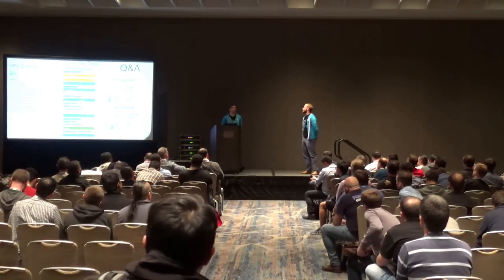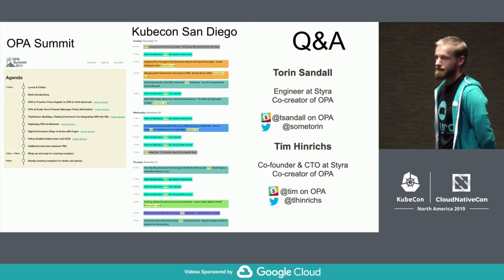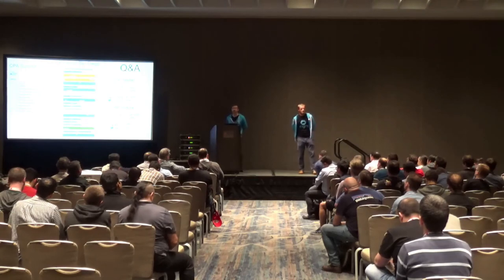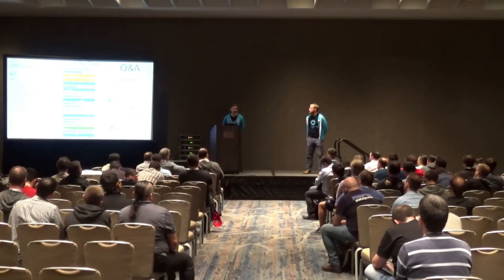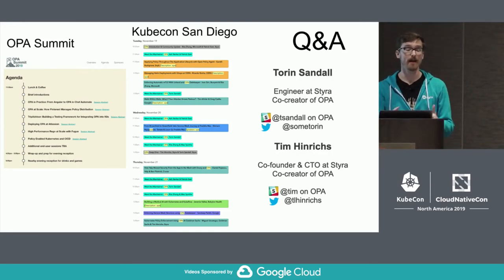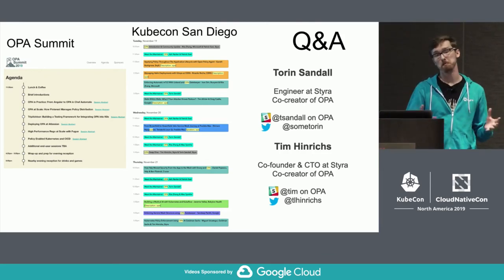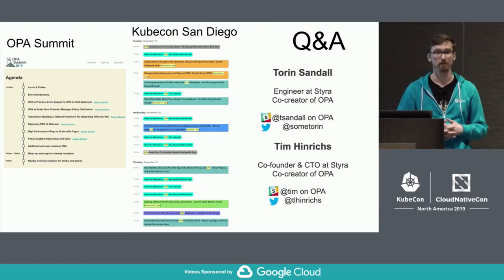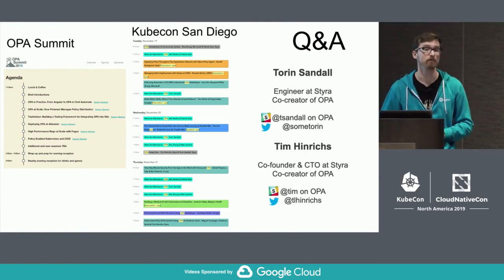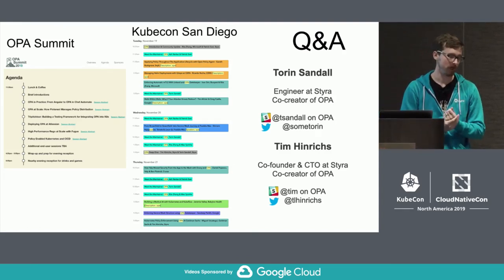Question: OPA supports JSON as input today — could you potentially support some binary format like protobuf as input? When we say JSON we mean any kind of complex hierarchical structured data. When you run OPA as a daemon it exposes an HTTP API that only supports JSON today. But if you embed OPA as a library in Go, you could have protobuf-serialized things coming into that service and then get passed into OPA. That's actually how the Envoy plugin works — we have a flavor of OPA specifically for integrating with Envoy.